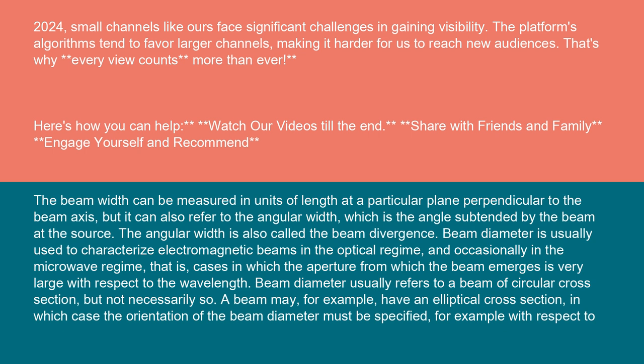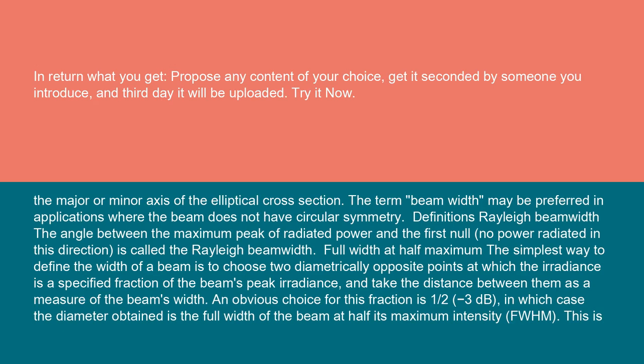Beam diameter usually refers to a beam of circular cross-section, but not necessarily so. A beam may, for example, have an elliptical cross-section, in which case the orientation of the beam diameter must be specified, for example, with respect to the major or minor axis of the elliptical cross-section. The term beam width may be preferred in applications where the beam does not have circular symmetry.